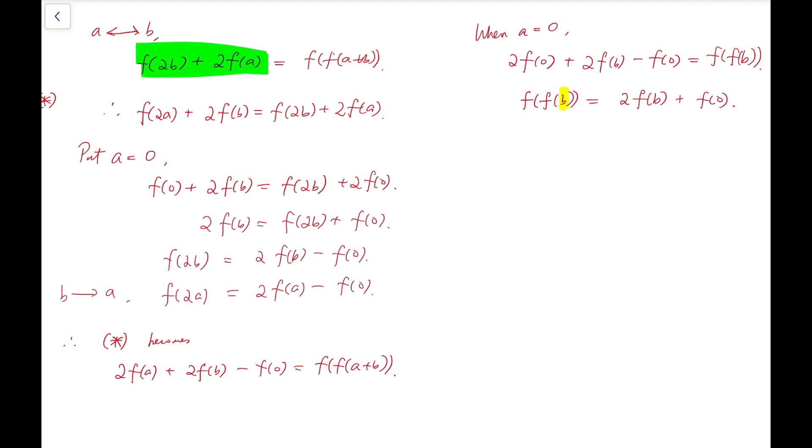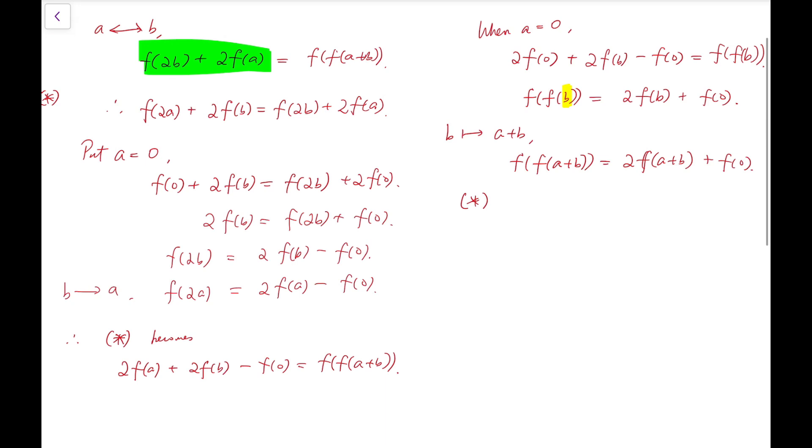Now the trick is I'm going to replace b back into a plus b. Then f of f of a plus b is actually equal to 2 times f of a plus b plus f of 0. So star can further be written as 2 times f of a plus b minus f of 0 equals 2 times f of a plus b plus f of 0. Further simplifying, f of a plus f of b equals f of a plus b plus f of 0. I've managed to remove the double f and ensure all terms under the function do not contain any constant multiple.